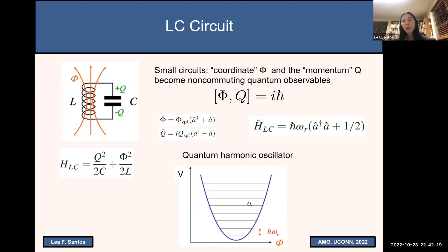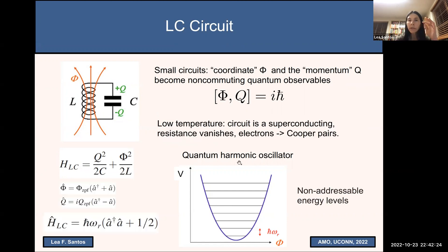Okay. Now you can say, well, how about the resistance? It's true, we have to take into account losses. But if this circuit is at very low temperature, the resistance will vanish. The circuit becomes superconducting. Instead of electrons, we'll be dealing with Cooper pairs. So we have this quantum harmonic oscillator. Very good.